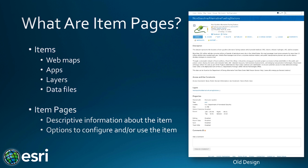Now if you own the item, you can access details in your contents. On screen you'll see an example item page before the June 2016 update — this one is for a feature service. You can see action items at the top, followed by the description, access and use constraints, layers contained in the item, and other properties. Each item type follows the same basic format but differs in options based on ownership or item type. A web map, for example, has different properties than a simple file stored in ArcGIS.